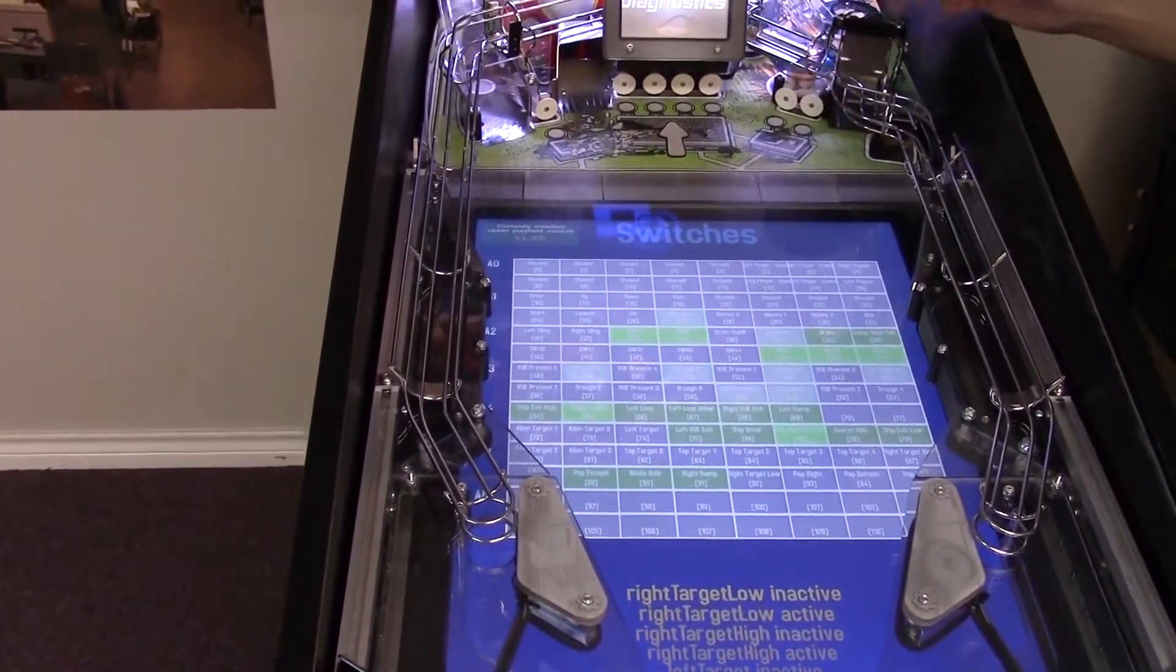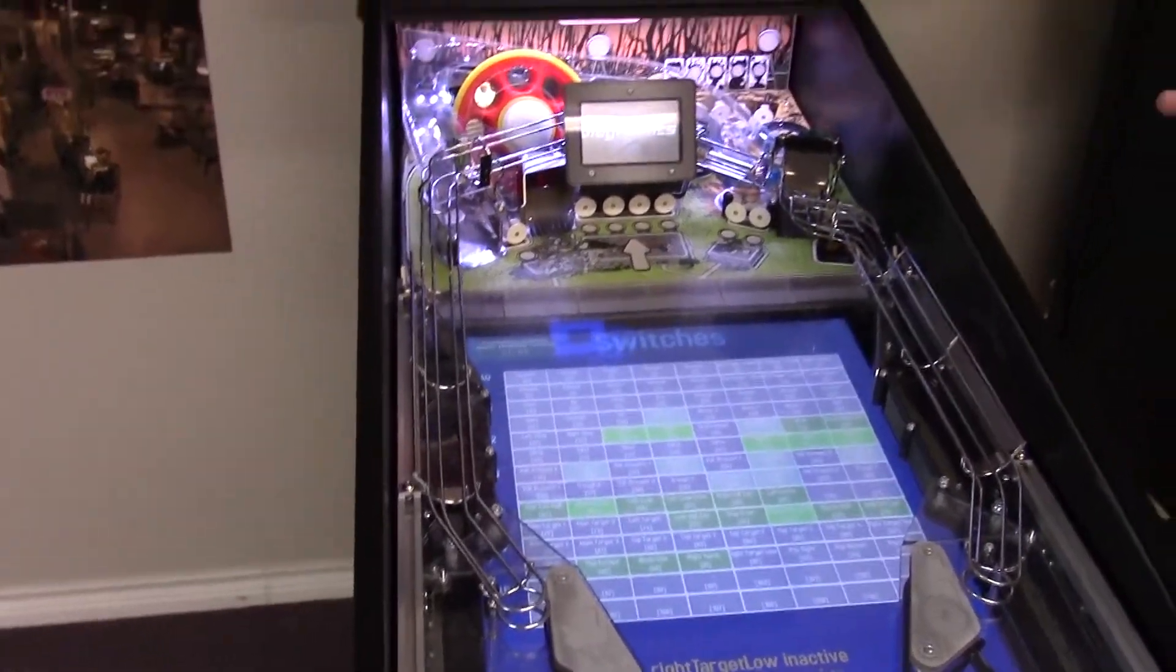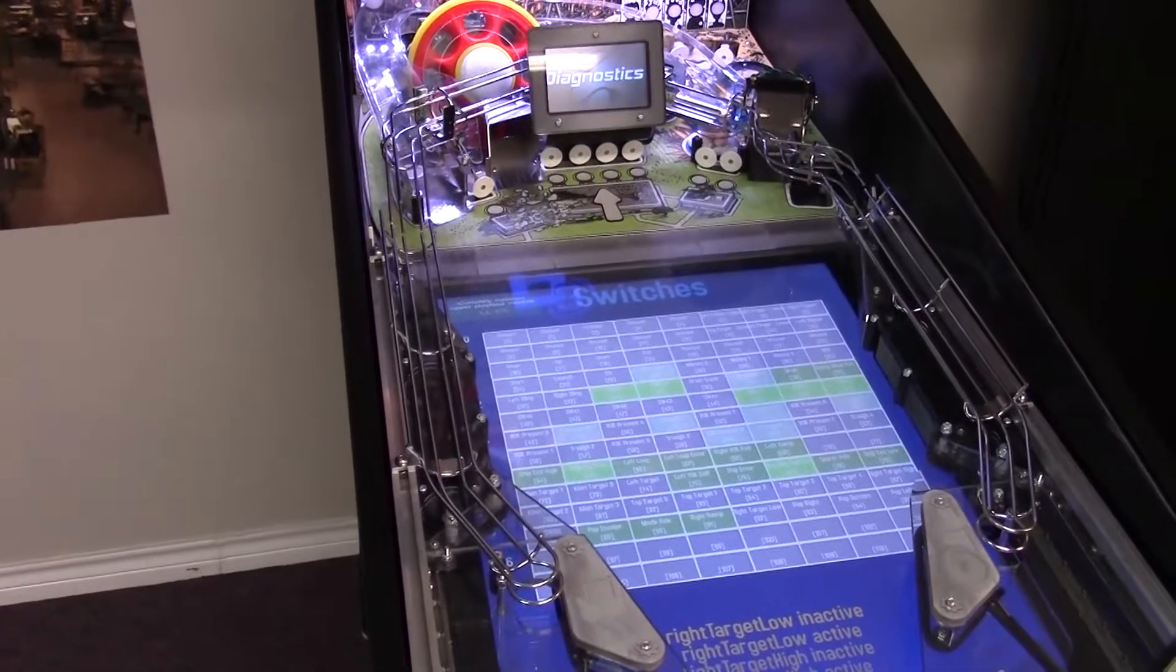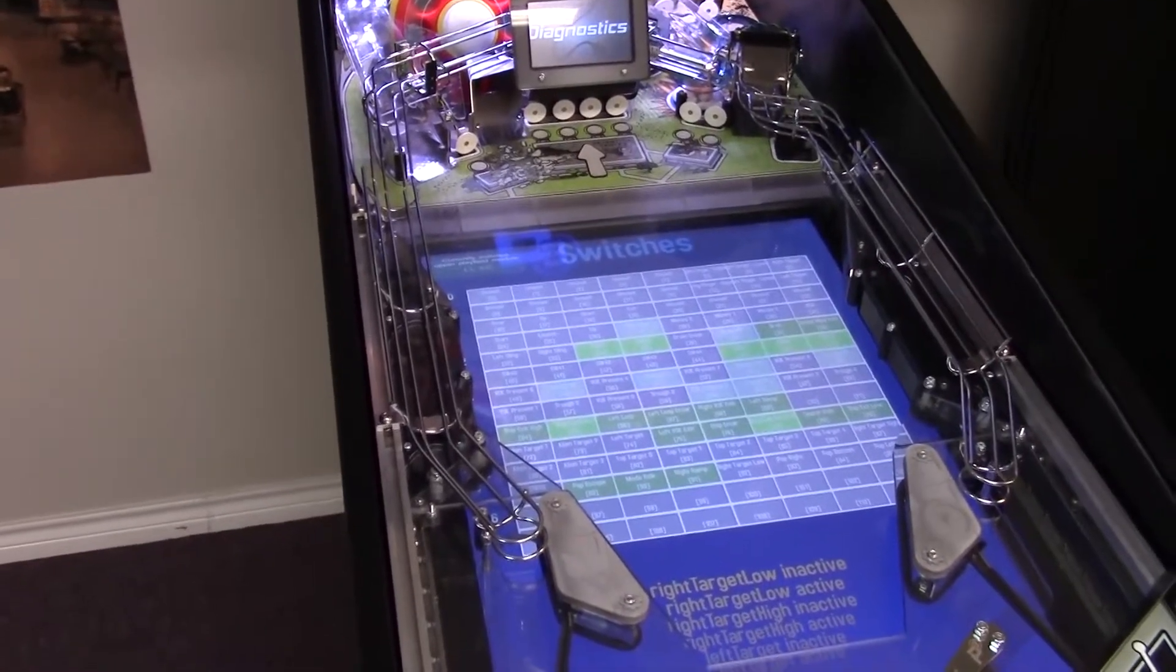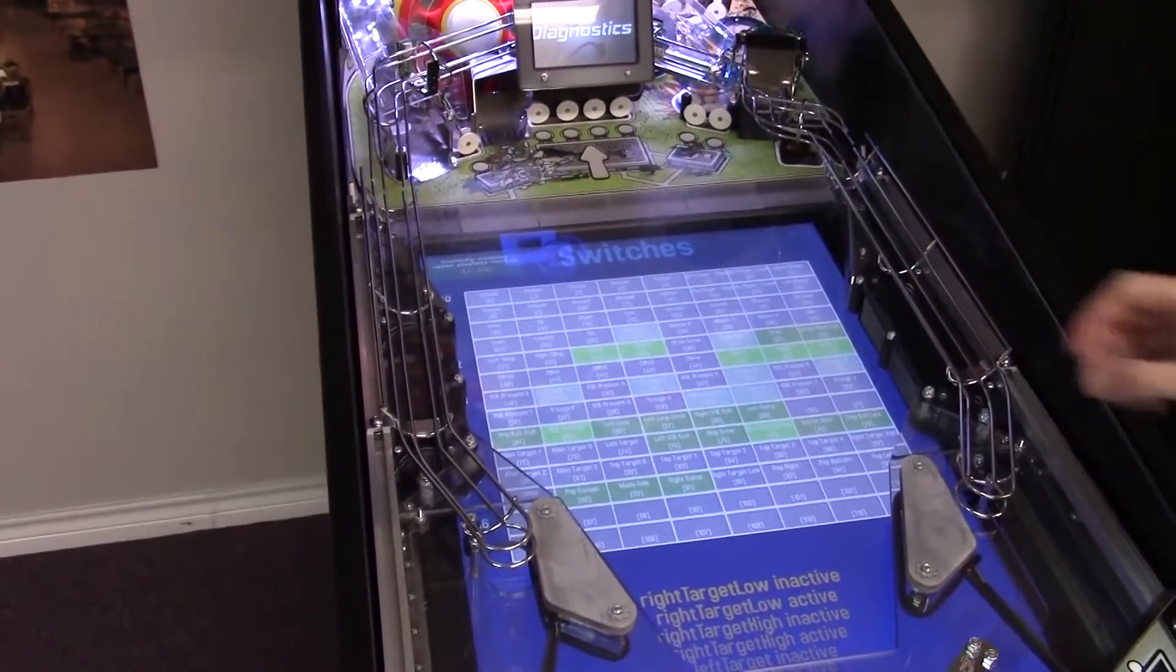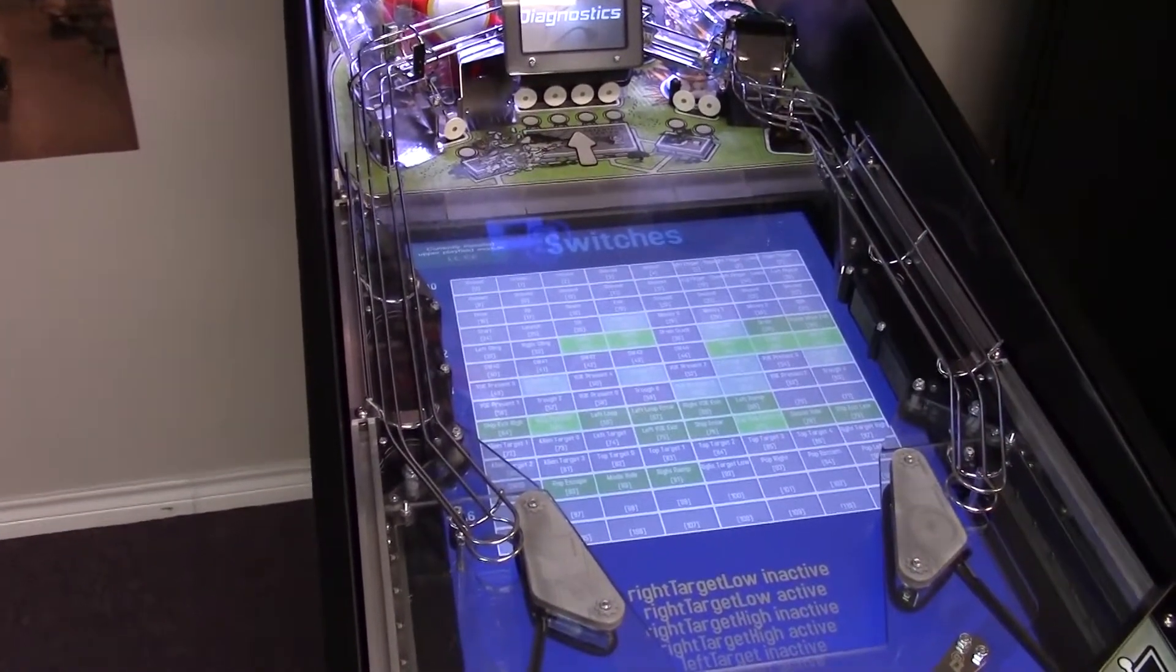Now, because we have the Lexi Lightspeed playfield installed, the diagnostic application recognizes that and includes all of the switches that are on the playfield in this display. If we had a different playfield installed, like the Cannon Lagoon playfield, the bottom portion of this list would be different and they'd represent the Cannon Lagoon switches.